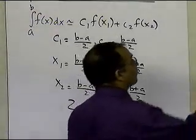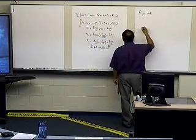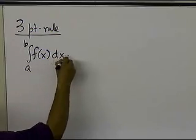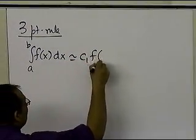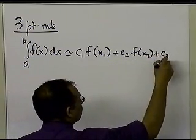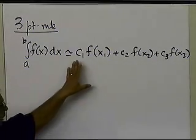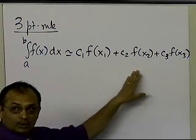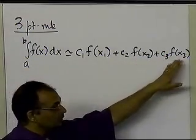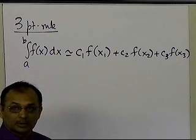Let's suppose we had to do a three-point rule — what would happen? We would integrate a function from a to b, f of x dx, and approximate it by c1 times f of x1, plus c2 times f of x2, plus c3 times f of x3. Because we have three points, that's the expression for a three-point Gauss quadrature rule. We now have six choices: c1, x1, c2, x2, c3, x3 — the points corresponding to where you evaluate the function.